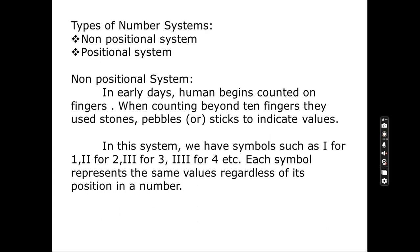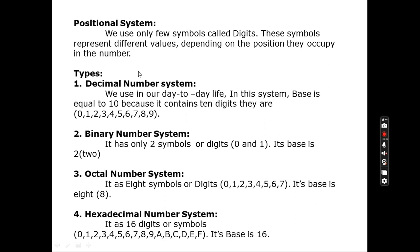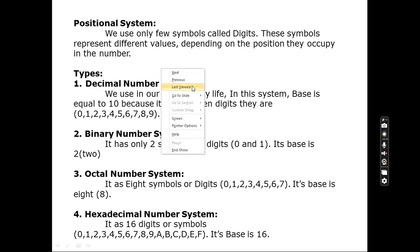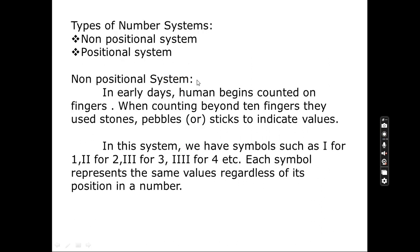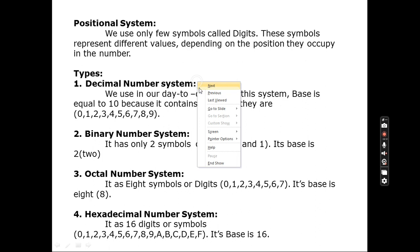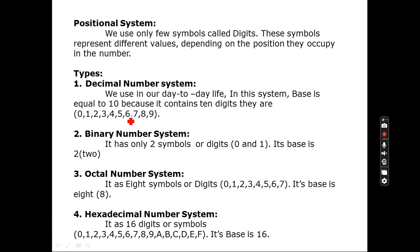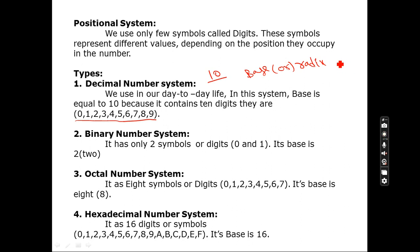Just go through with this concept as I've explained and noted here. Now in the positional number system we have four categories: decimal number system, binary number system, octal, and hexadecimal. What is the meaning of decimal number system? 'Deci' means 10, so it has 10 symbols or digits — that is 0 to 9. The base or radix is 10.